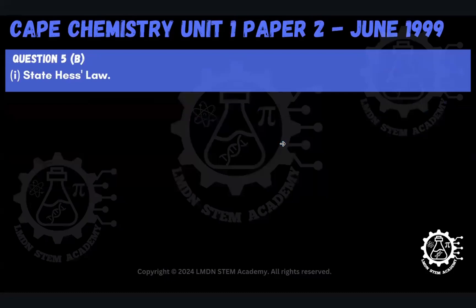Welcome back to another video with us here at LMD and STEM Academy. In this video, we will be working on question 5, part B, from the CAPE Chemistry Unit 1 paper two exam from June 1999.